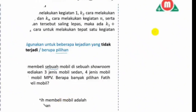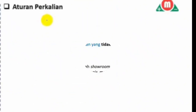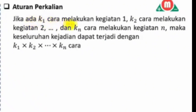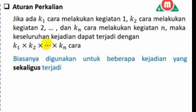Kemudian yang kedua ada aturan perkalian. Jika ada K1 cara melakukan kegiatan 1, K2 cara melakukan kegiatan 2, dan seterusnya, dan ada KN cara untuk melakukan kegiatan N, maka keseluruhan kejadian dapat terjadi dengan K1 kali K2 kali seterusnya sampai KN cara. Cirinya biasanya untuk aturan perkalian ini untuk kejadian yang sekaligus terjadi.